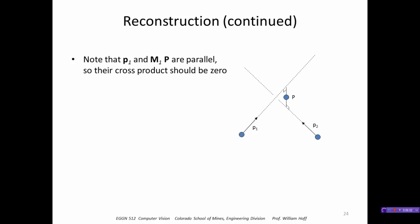So since P1 and Mp1 are parallel, remember this is the observed point, this is the projected point, so ideally those are parallel so their cross product should be 0, and similarly for P2 and M2 P2. So the point P, this unknown that we're trying to find, should satisfy these two equations.